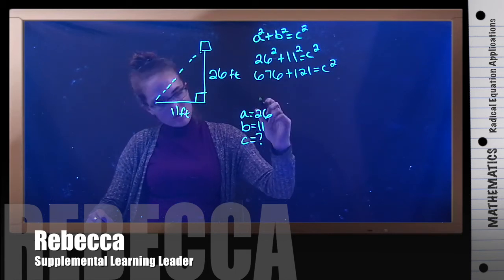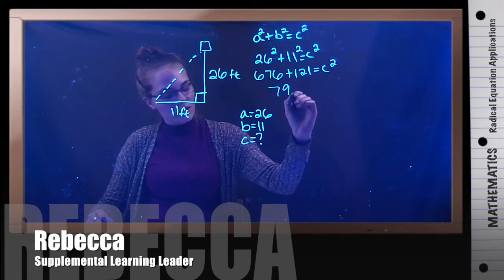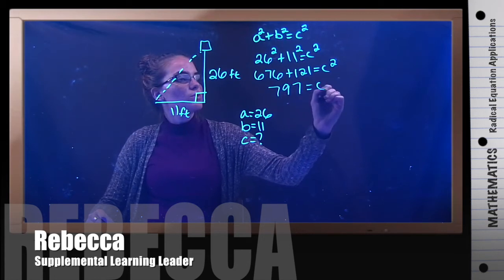And now you can add these together and you get 797 = c².